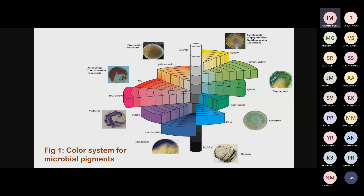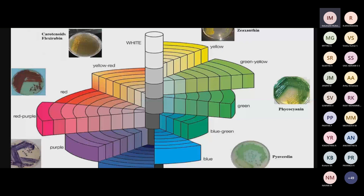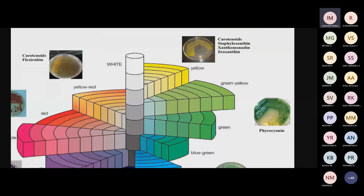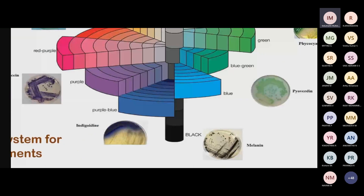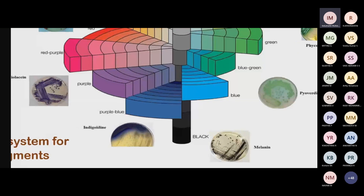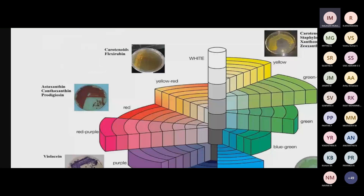Looking at the color spectrum for microbial pigments, bacteria produce a wide range. Yellow pigments include teratinox, staphyloxanthin, xanthomonin, and griaxanthin. Green pigments include phycocyanin. Blue pigments include pyoverdine and phycocyanin. Black includes melanin. Blue-purple includes indigoidine and violacein. Red pigments include astaxanthin, canthaxanthin, prodigiosin, carotenes, and plexiridin. This wide color range from microorganisms even exceeds what many natural plant sources can provide.